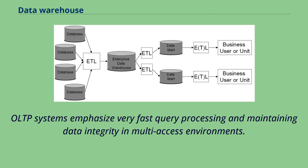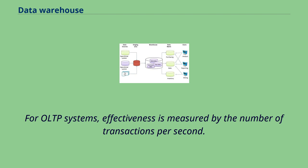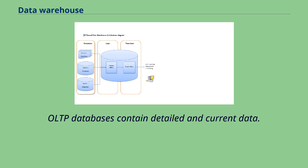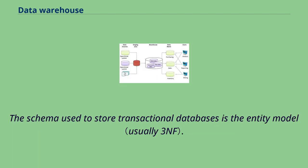Online transaction processing (OLTP) is characterized by a large number of short online transactions. OLTP systems emphasize very fast query processing and maintaining data integrity in multi-access environments. Effectiveness is measured by the number of transactions per second. OLAP databases contain detailed and current data, and the schema used to store transactional databases is the entity model.